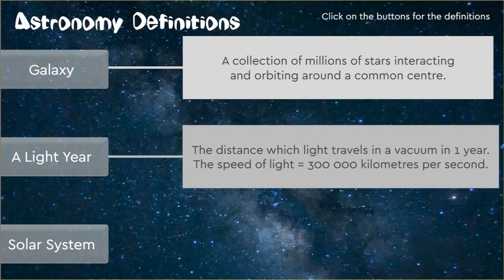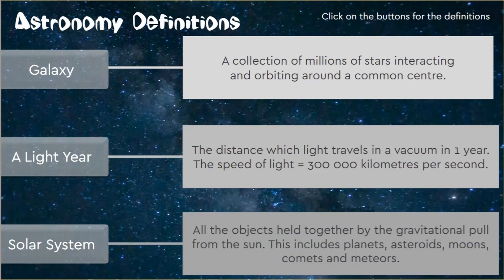A light year is the distance which light travels in a vacuum in one year. The speed of light is 300,000 kilometers per second. Do you know how fast that is? The solar system is all objects held together by the gravitational pull from the sun.